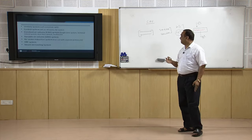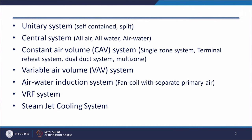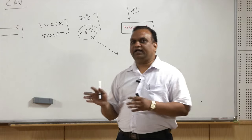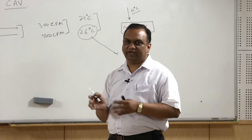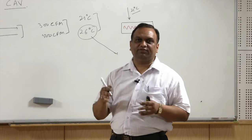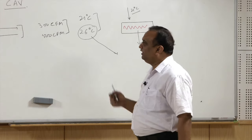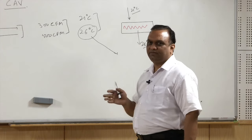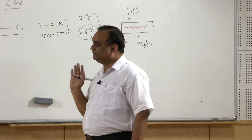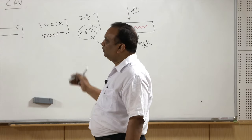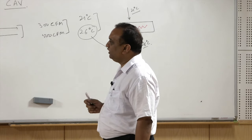Multi-zoning: in a building some parts may require 26°C and others 21°C, or different air conditions in different parts of the building. Multi-zoning is done and each zone is provided a separate expansion device to attain the required state of air.